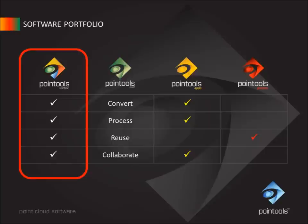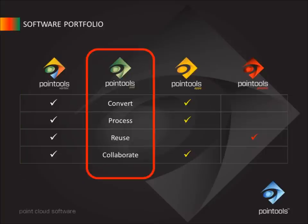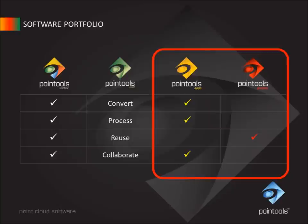We are totally committed to creating the best performing software for working with the largest point cloud models inside the broadest range of applications. We develop all PointTools innovations in our platform, which we call PointTools Vortex. We also license this platform technology to other software developers so they can deliver best-in-class point cloud performance to their own end users. We have our own point cloud data format — the PointTools pod file — which delivers unrivalled performance and accuracy. Using our Vortex platform and pod file format, we create standalone applications for point cloud conversion, processing and collaboration, and a portfolio of plugins that enable high-quality point cloud reuse without the usual performance hit.